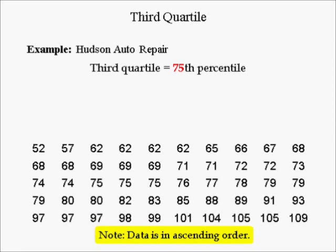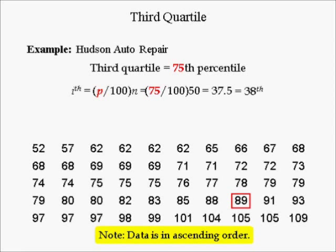The third quartile is the 75th percentile. Using the sorted data again, with p = 75 and n = 50, i = (75/100) × 50 = 37.5, which is not an integer, so we round up to 38. The 75th percentile is the 38th value in the sorted data, which equals 89.